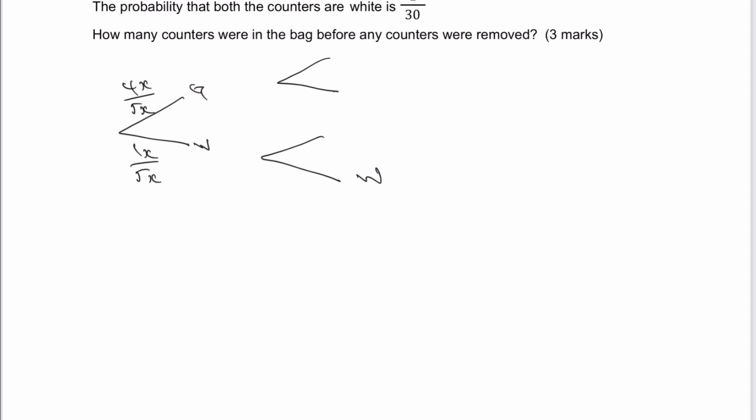So therefore, I can write this as 1x minus 1 divided by 5x minus 1. And when we multiply those two probabilities together, we're told that that will equal 1 over 30. So really, it's just a case of solving this particular equation for x.